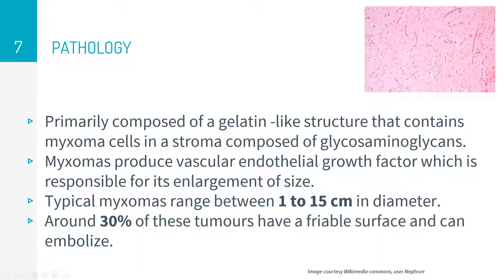An important point to remember is that myxomas produce vascular endothelial growth factor (VEGF), which is responsible for their increasing size. They typically start as small growths of a few millimeters but can range between 1 to 15 centimeters in diameter. About 30% have a friable, irregular surface, and these are the ones that can embolize and cause complications.